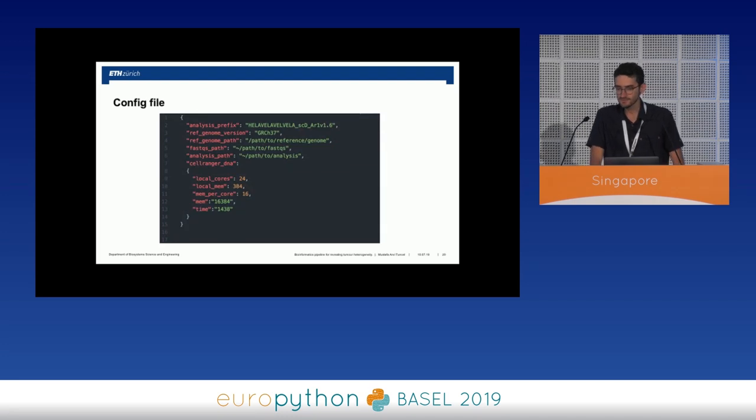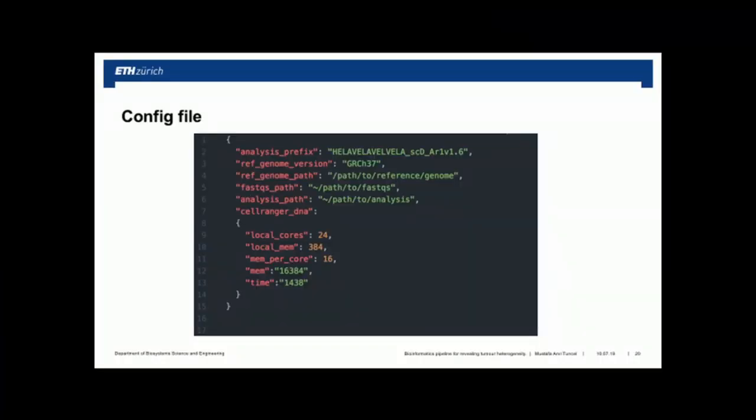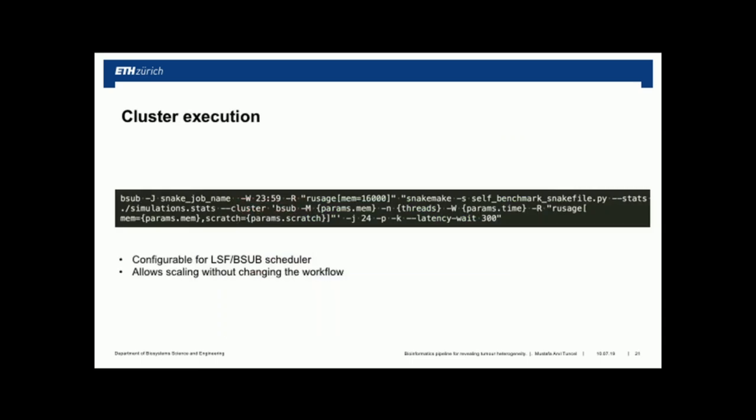Here is an example config file. Snakemake supports two formats: JSON and YAML. YAML has the advantage of allowing comments, but JSON has the advantage of being easily serializable — I often create JSONs from Python dictionaries to automate certain tasks. You can also use any other Python parser for the config. JSON and YAML are the two officially supported syntaxes in Snakemake.